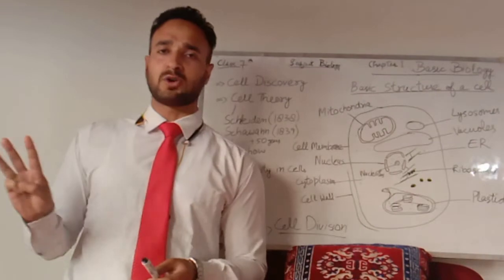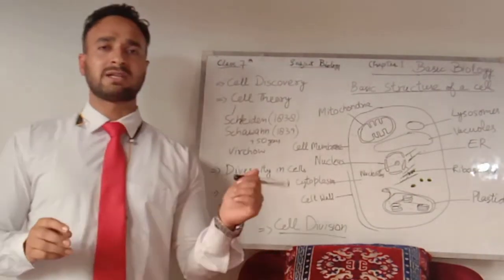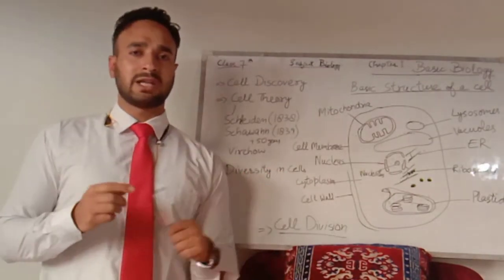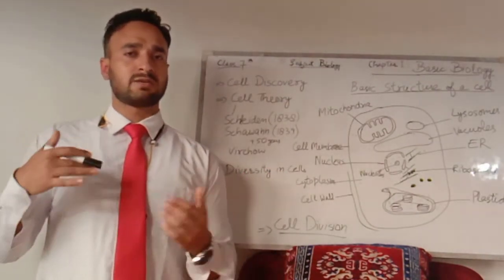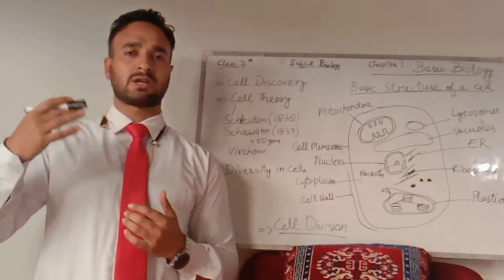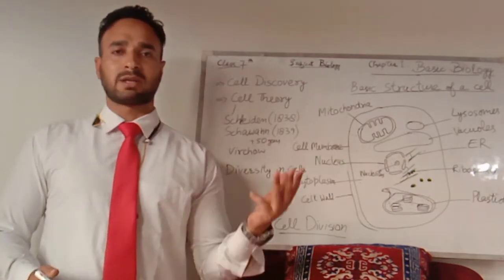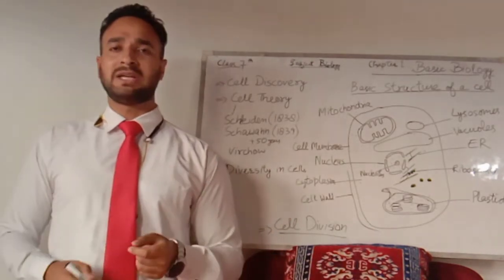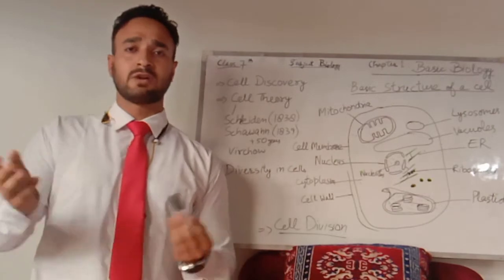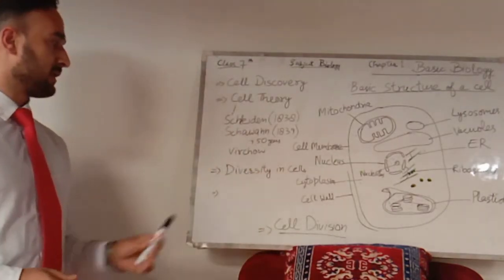These are the three main postulates of the modern cell theory: all living organisms are made up of cells; the cell is the basic structural and functional unit of life; and all cells arise from pre-existing cells.